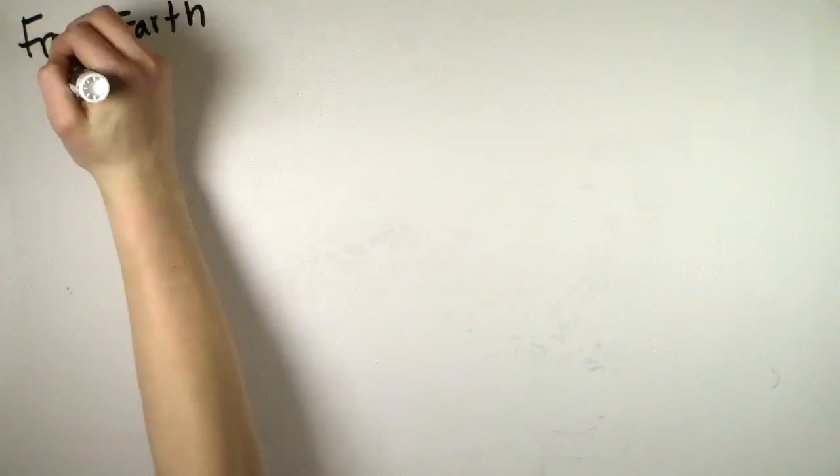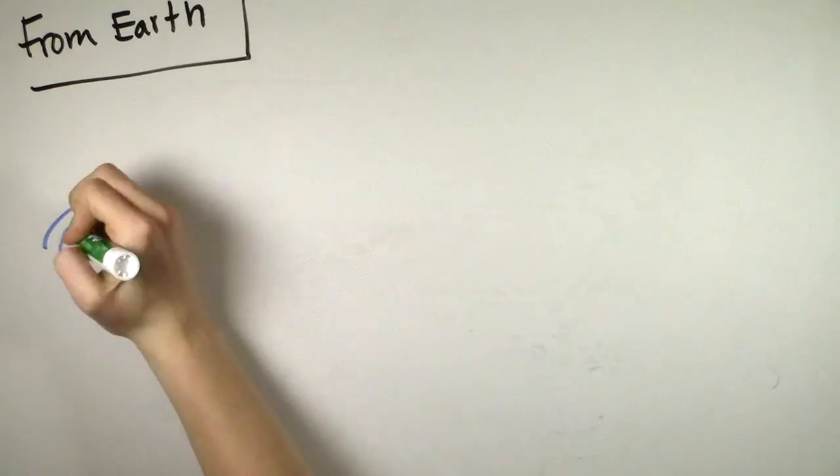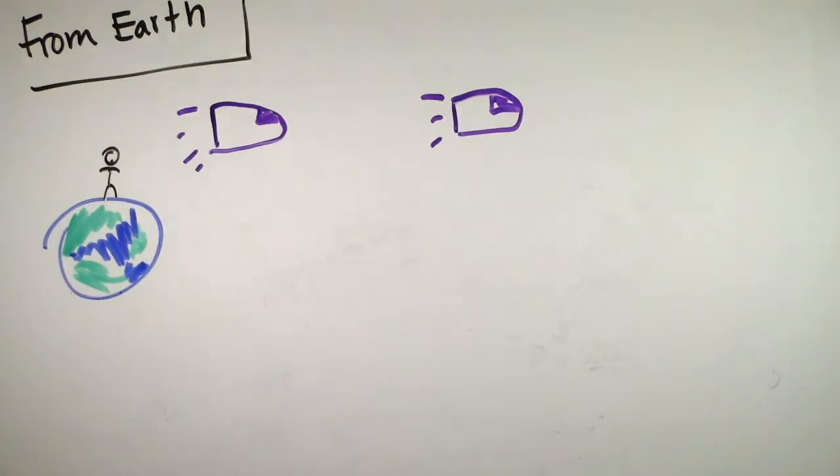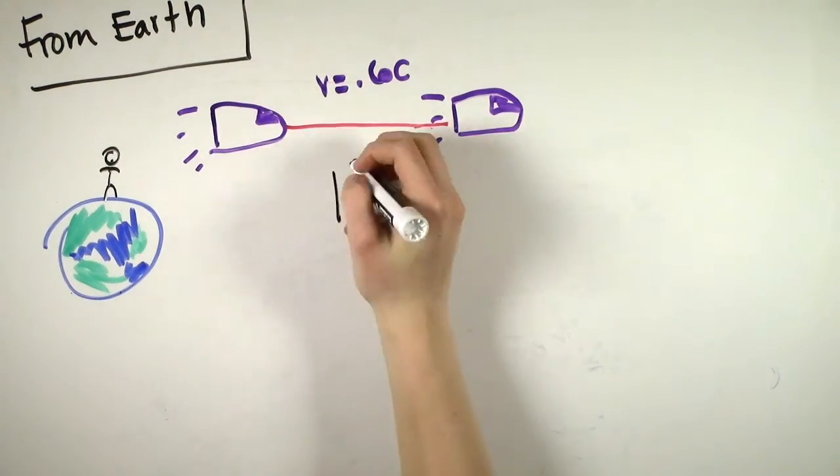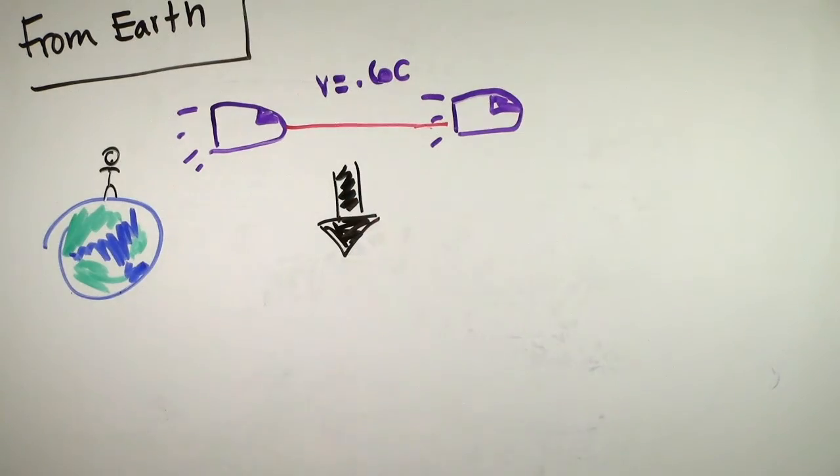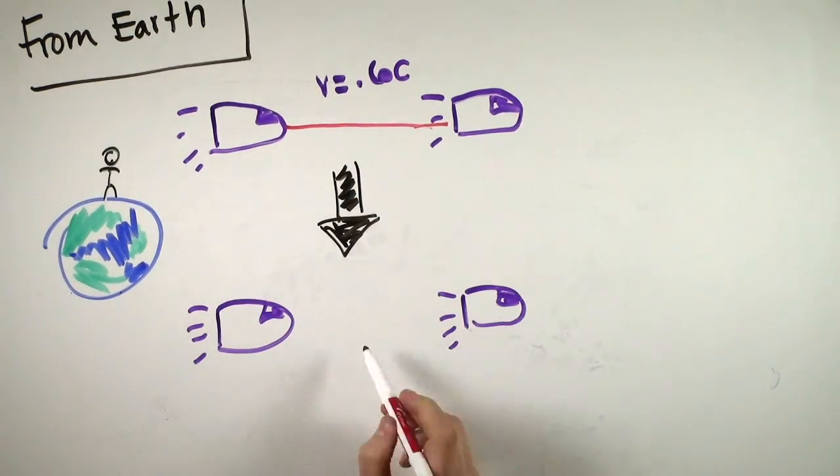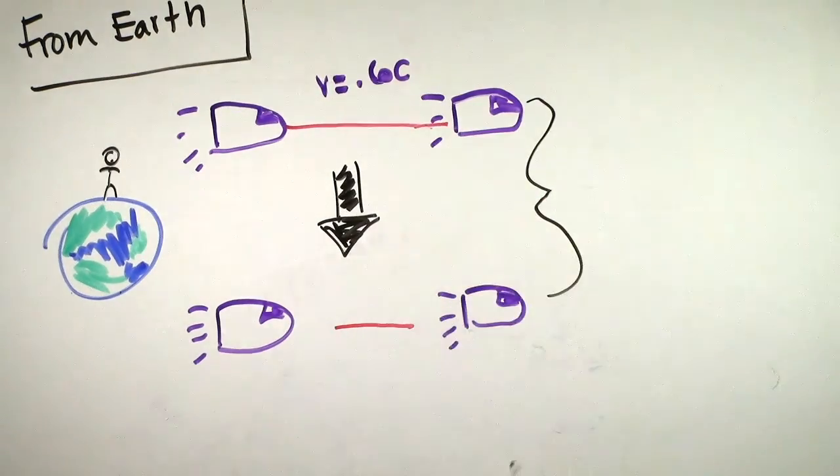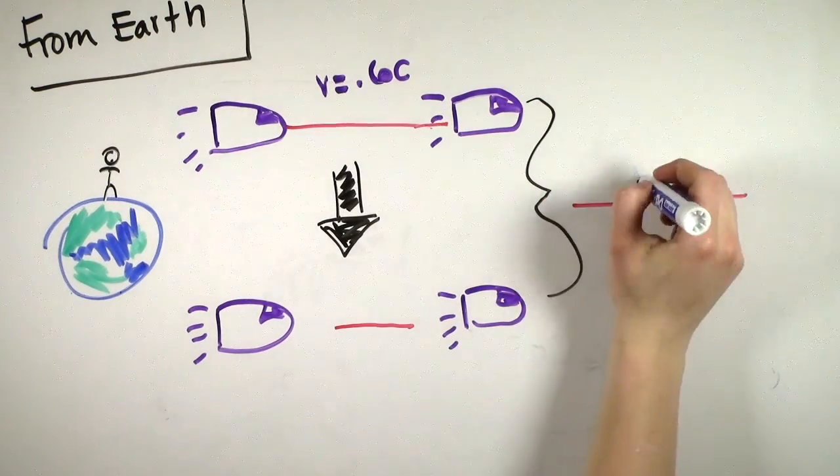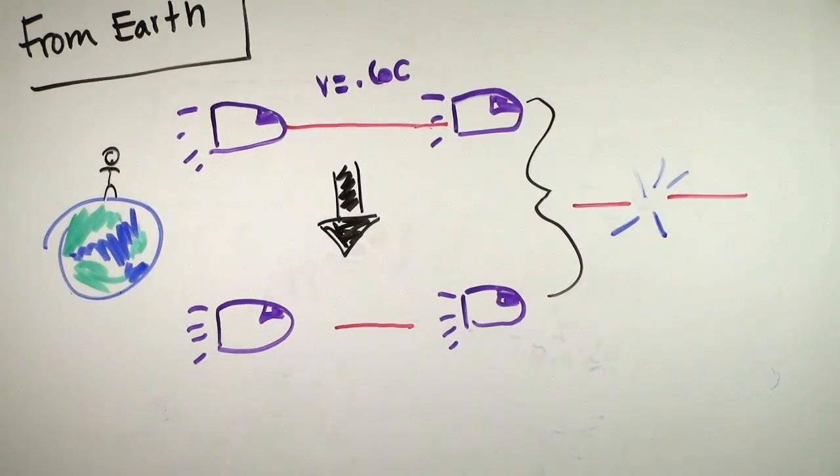In the first reference frame, someone at rest on Earth watches as the spaceships fly by, let's say hypothetically at 60% the speed of light. Thanks to the property of length contraction, the rope between the two spaceships seems to contract, but as stated in the problem, the distance between the ships stays constant in the Earth reference frame. Thus, the rope is now shorter than the distance it has to span, and it must break.